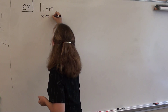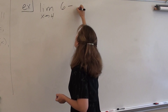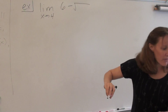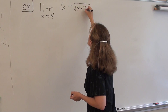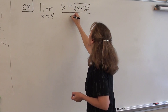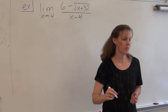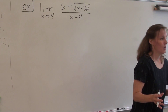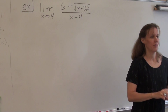The limit as x approaches 4 of 6 minus the square root of x plus 32, all over x minus 4. Now, if you plug a 4 in, what do you get? Undefined.